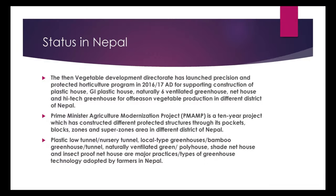Status of Greenhouse in Nepal: The then-Vegetable Development Directorate launched the Precision and Protected Horticulture Program in 2016–17 AD, supporting construction of plastic houses, GI plastic houses, naturally-ventilated greenhouses, net houses, and high-tech greenhouses for off-season vegetable production in different districts of Nepal.